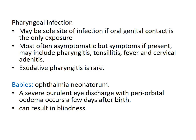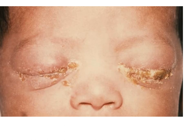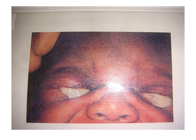Pharyngeal infection may be the sole site of infection if oral-genital contact is the only exposure. Most often it is asymptomatic, but symptoms may include pharyngitis, tonsillitis, fever, and cervical adenitis; exudative pharyngitis is rare. Babies present with ophthalmia neonatorum — a severe purulent eye discharge with periorbital edema — occurring a few days after birth. Untreated ophthalmia neonatorum can result in blindness.